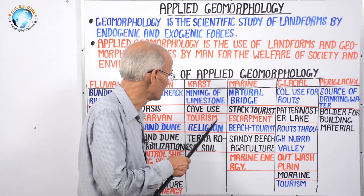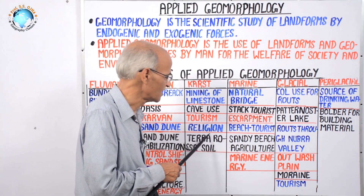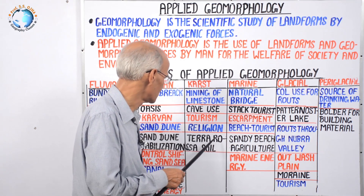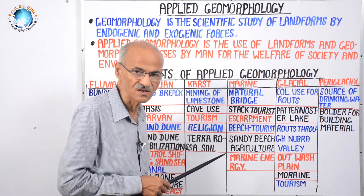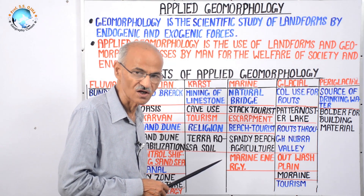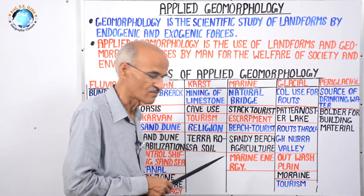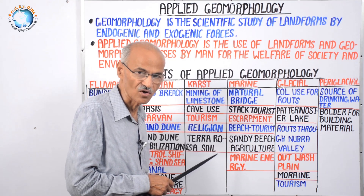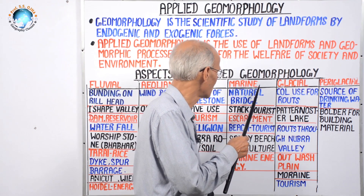Next is religion. In caves there are stalactites and stalagmites, which people regard as nature's creation, and especially religious people visit for worship. Next is terra rosa soil — when the entire karst topography collapses and a polge landscape develops, the remaining material is called terra rosa or terra roxa soil, which is suitable for coffee crop production.